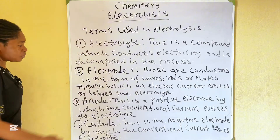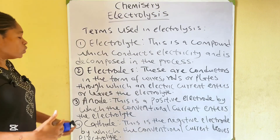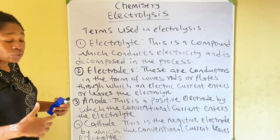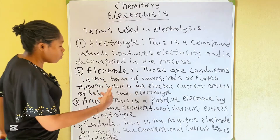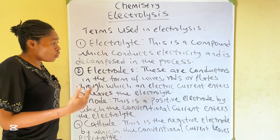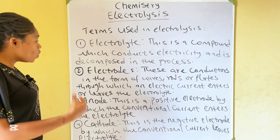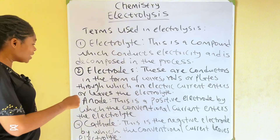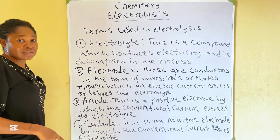Electrode. Electrodes are conductors — they are metallic conductors in the form of wires, rods, or plates through which an electric current enters or leaves the electrolyte.